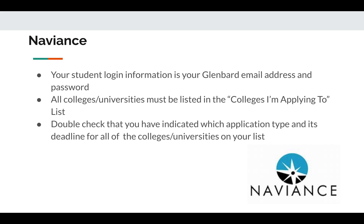If you decide not to apply to a school on this list, only your counselor can remove that college or university from your list, so reach out to them directly if you need any schools removed. Double check that you have indicated which application type you have submitted or are planning on submitting and its deadline. This is important for all of the schools on your list.